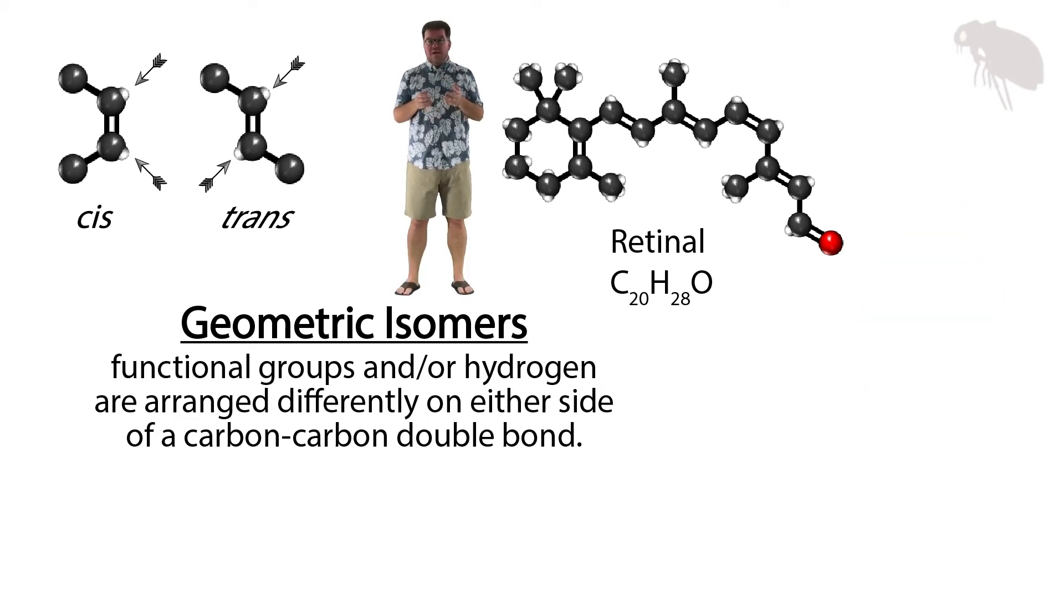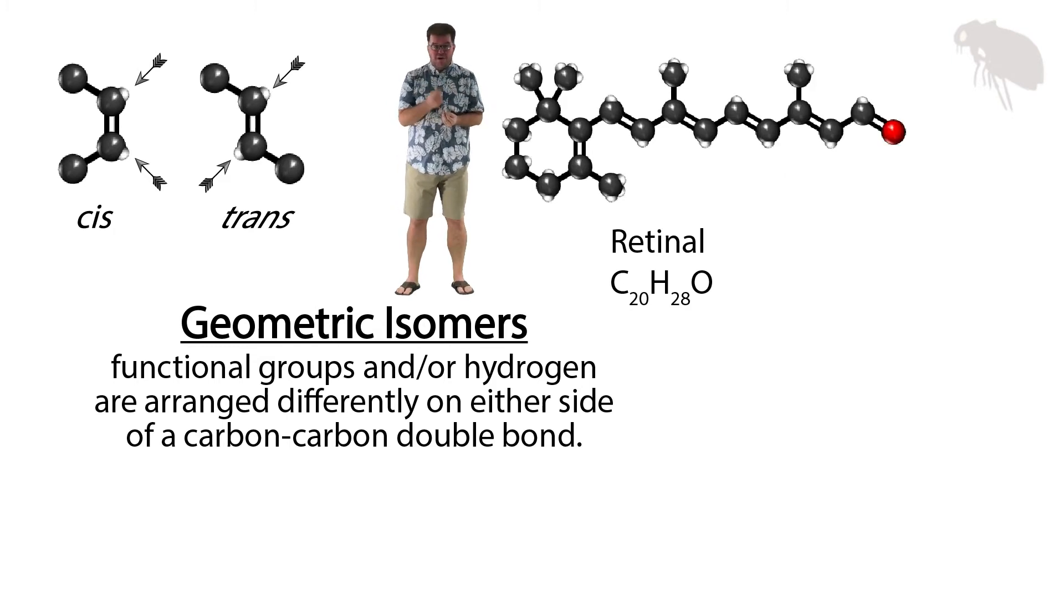You see the tail coming off the retinal molecule over there, it's bent, right? It goes out and it has a bend in it. Let's take that double bond where the bend exists and change it to a trans isomer. Now notice as soon as that happens, it goes from a bent tail to a straight tail structure.